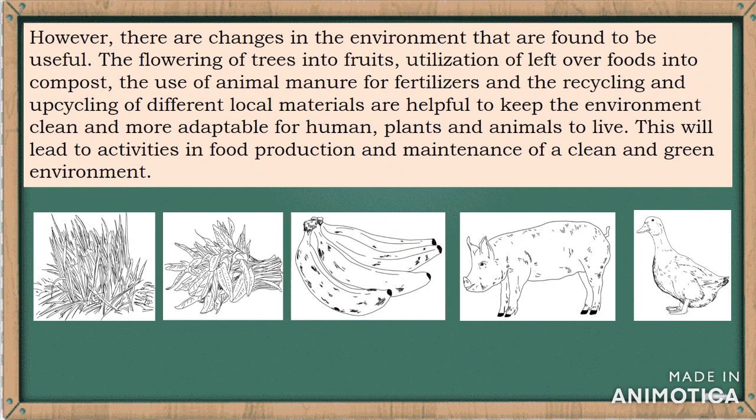However, there are changes in the environment that are useful. The flowering of trees into fruits, utilization of leftover food into compost, the use of animal manure for fertilizers, and the recycling and upcycling of different local materials are helpful to keep the environment clean and more adaptable for humans, plants, and animals to live. This will lead to activities in food production and maintenance of a clean and green environment.